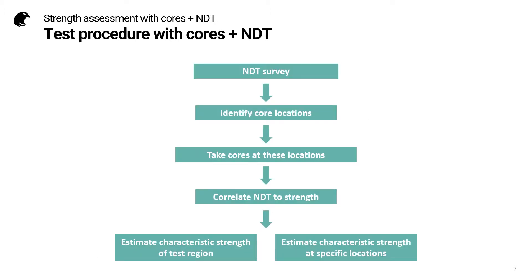This is the workflow when using the combined method. First, we do an NDT survey to map out strength variations in the structure. Based on this, we define the optimum core locations, then take cores at those locations. The results from the core tests are used to correlate the NDT measurements to compressive strength — in effect, calibrating our rebound hammer or pulse velocity instrument to the concrete under test. Using the established relationship, we can estimate the characteristic strength for the test region, and also at any specific location within it.